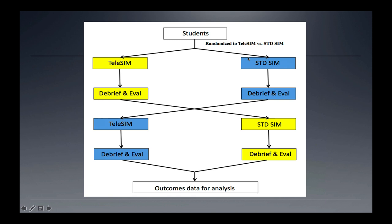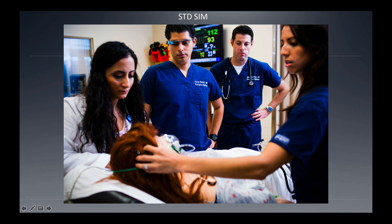We randomize students to either the standard simulation group or the telesimulation group. The standard simulation group is physically inside the simulation lab, making decisions, touching the mannequin, and performing procedures on the high-fidelity simulator. The telesimulation group is in a remote location watching the standard group real-time during their scenario. Afterwards, there is a group debriefing where everyone shares thoughts, feelings, and attitudes, discussing the rationale behind decisions. Then there is a formal evaluation measuring knowledge content — the cognitive learning domain. Then students cross over to the other group.